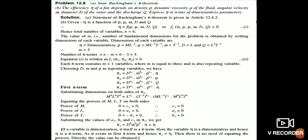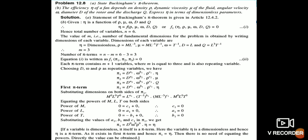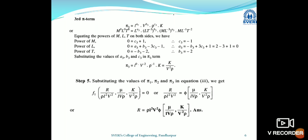For π3 = L^a3 · V^b3 · ρ^c3 · K, where K (bulk modulus) has dimensions ML⁻¹T⁻². Equating powers of M: c3 = −1. Equating powers of L: a3 = 0. Equating powers of T: b3 = −2. Therefore π3 = K / (V²ρ).